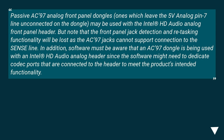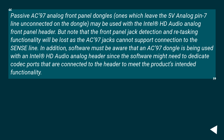Passive AC97 analog front panel dongles — ones which leave the 5V analog pin 7 line unconnected on the dongle — may be used with the Intel HD audio analog front panel header. But note that the front panel jack detection and retasking functionality will be lost, as the AC97 jacks cannot support connection to the sense line. In addition, software must be aware that an AC97 dongle is being used with an Intel HD audio analog header, since the software might need to dedicate codec ports connected to the header to meet the product's intended functionality.